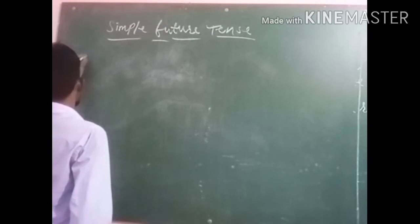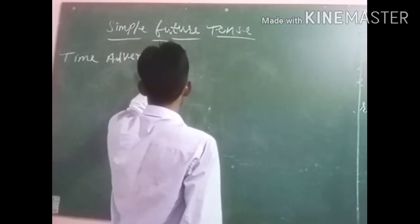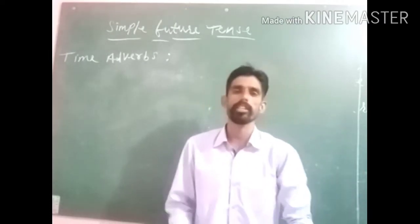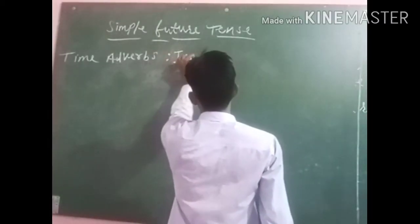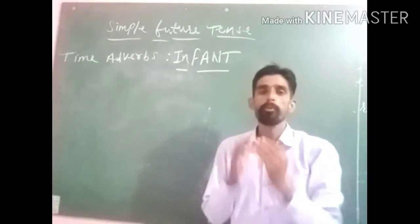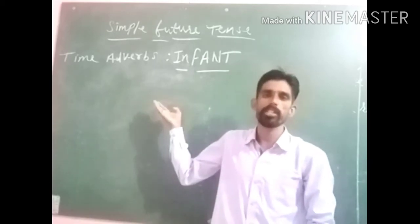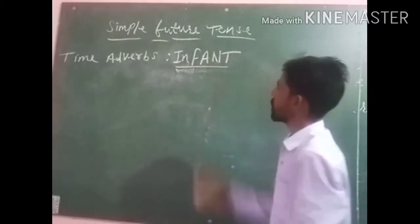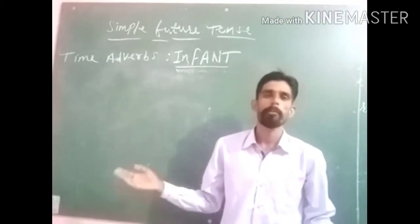The first thing required to be learned is time adverbs. I have made one trick so that you can easily learn all the time adverbs of simple future tense. The trick is I-N-F-A-N-T — infant. Infant is a word used for a newborn baby. In simple future tense we can learn all the time adverbs using this short trick — infant.